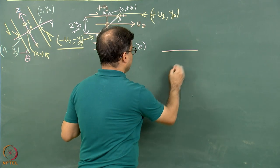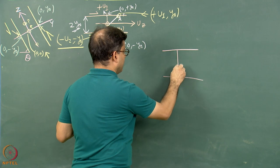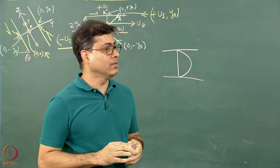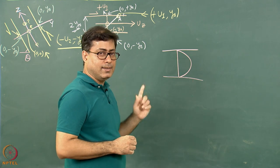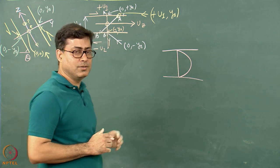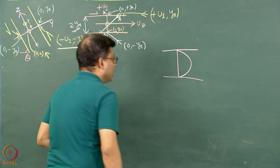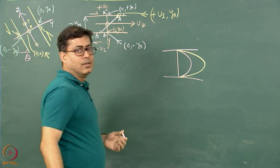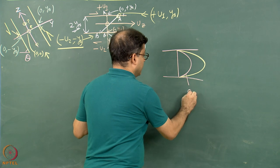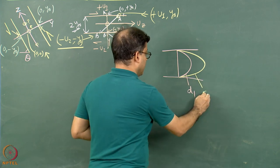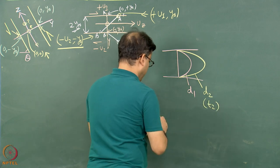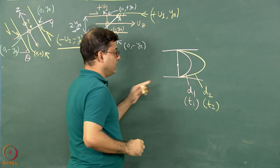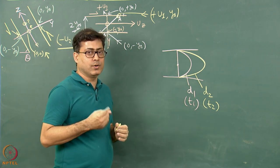Taking the easy example first: a Poiseuille flow happening from left towards right, for a Newtonian viscous fluid passing through rigid boundaries — infinitely long, single fluid, no temperature variation inside, no heterogeneity in the material. Suppose I have drawn a displacement profile D1 at time T1 and another displacement profile D2 at time T2.